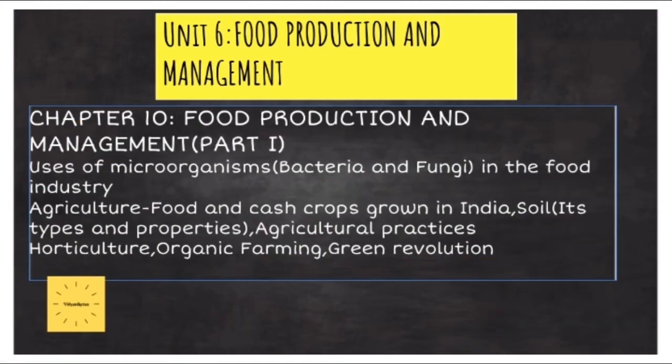The sixth and the final unit in the syllabus of class 8 ICC Biology is Food Production and Management. This unit is divided into two chapters, part 1 and part 2. In the part 1 of this chapter, we will study about uses of microorganisms, namely bacteria and fungi in the food industry. We will study about agriculture, the different food and cash crops grown in India, soil, its types and properties and the different agricultural practices followed. Then we will study about horticulture, i.e. garden cultivation, about organic farming and green revolution.